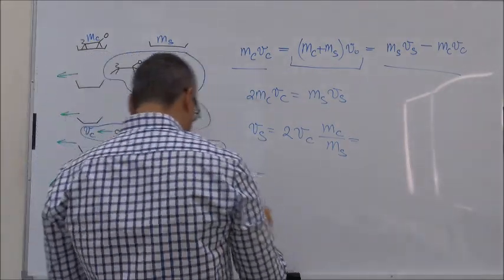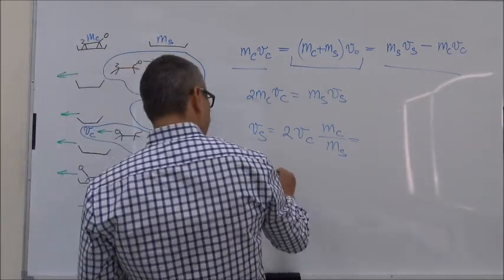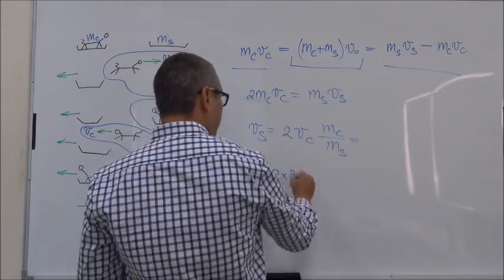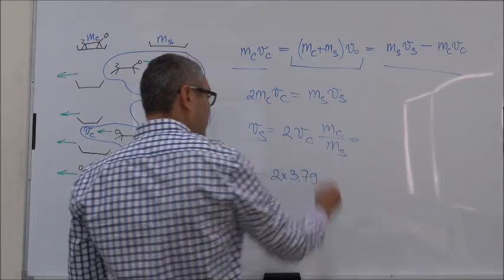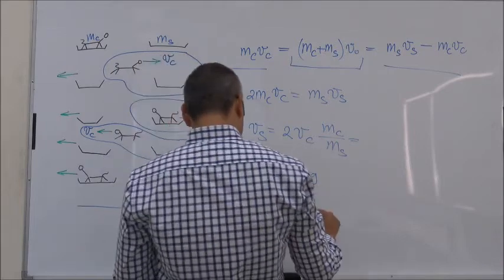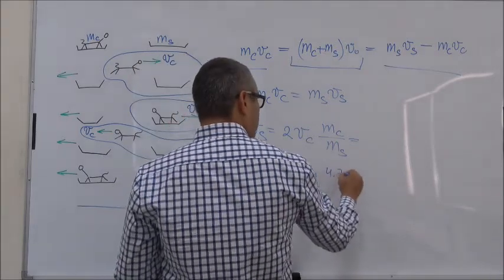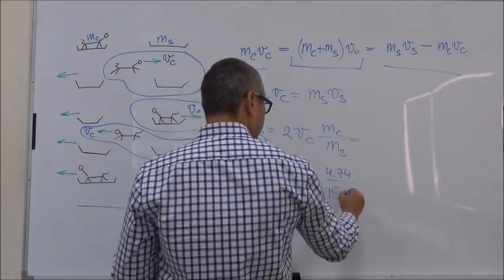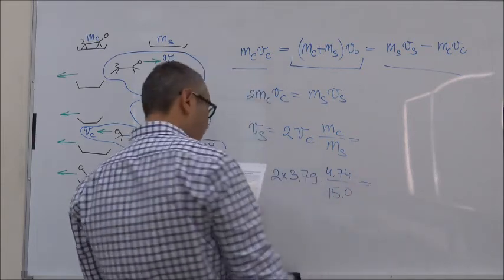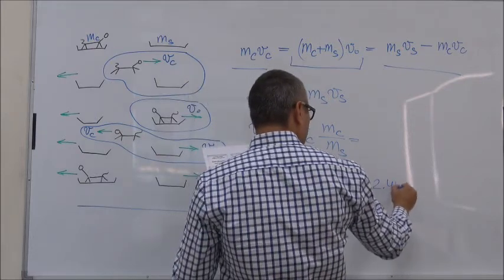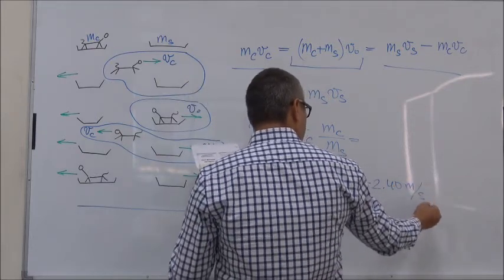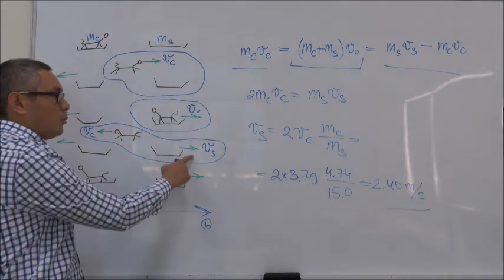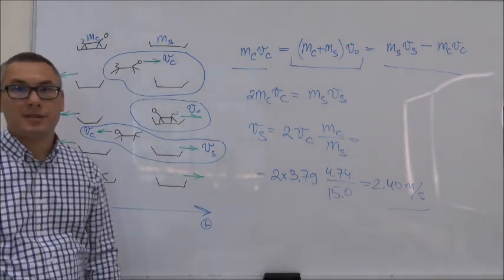Now we can just use the numbers. Two times the velocity of the cat, which is given as 3.79 meters per second, times the mass of the cat, 4.74 kg, divided by the mass of the sled, 15 kg, gives us 2.40 meters per second. That is the velocity of the second sled with respect to the ice after the second jump.